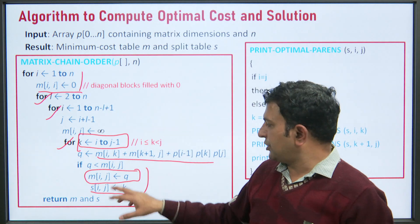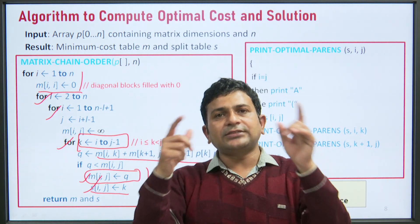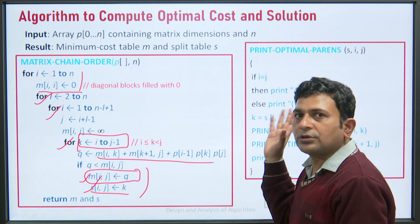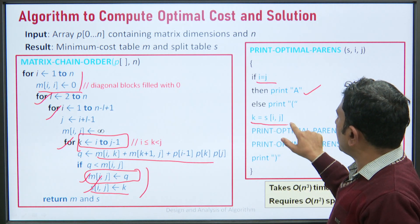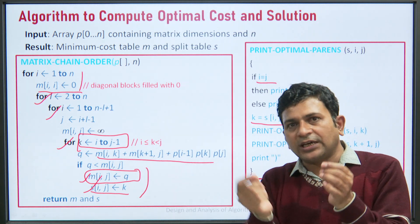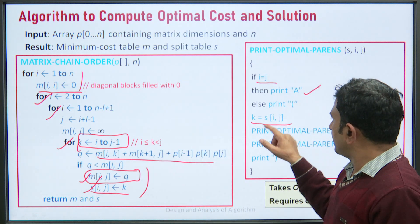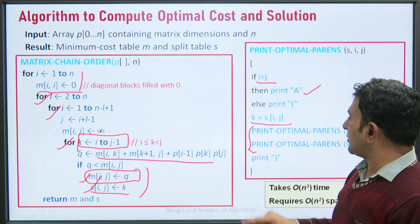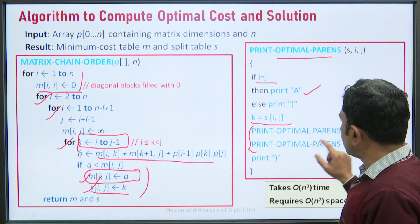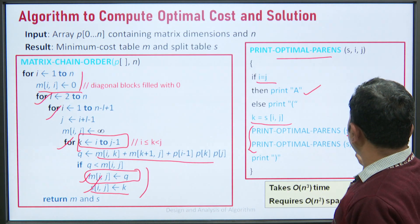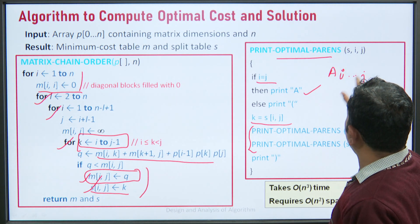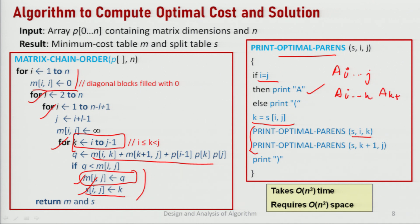Once we have computed matrices M and S, we find the final answer — how to parenthesize the sequence of matrices. If i equals j, we simply print the matrix name. Otherwise we find the value of k from matrix S — the position where we break the sequence — and recursively call the function for A_{i..k} and A_{k+1..j}, then bracketize them. This is how we parenthesize the sequence of matrices.